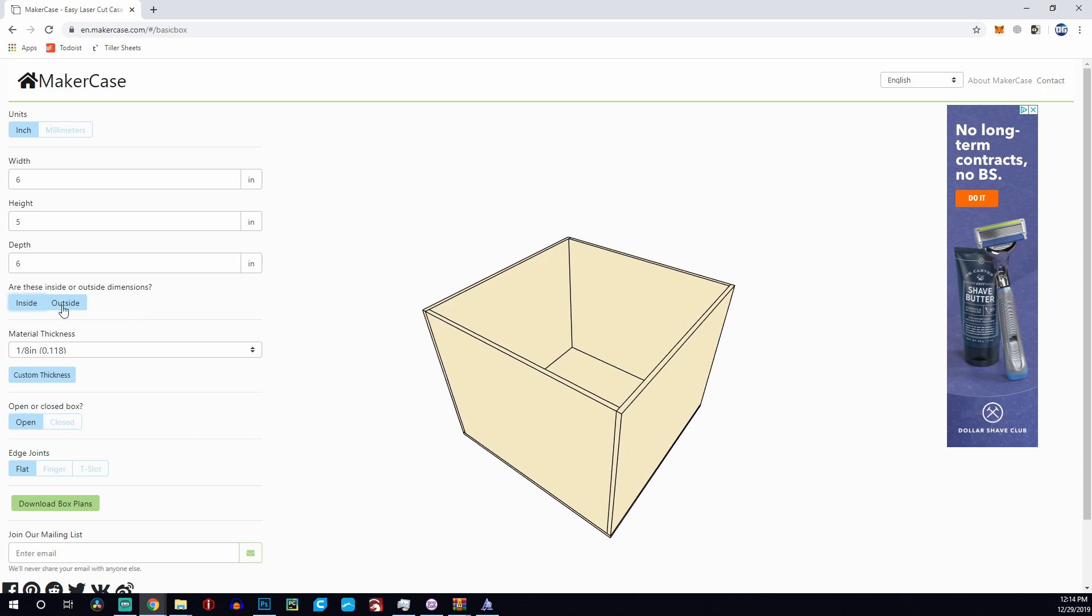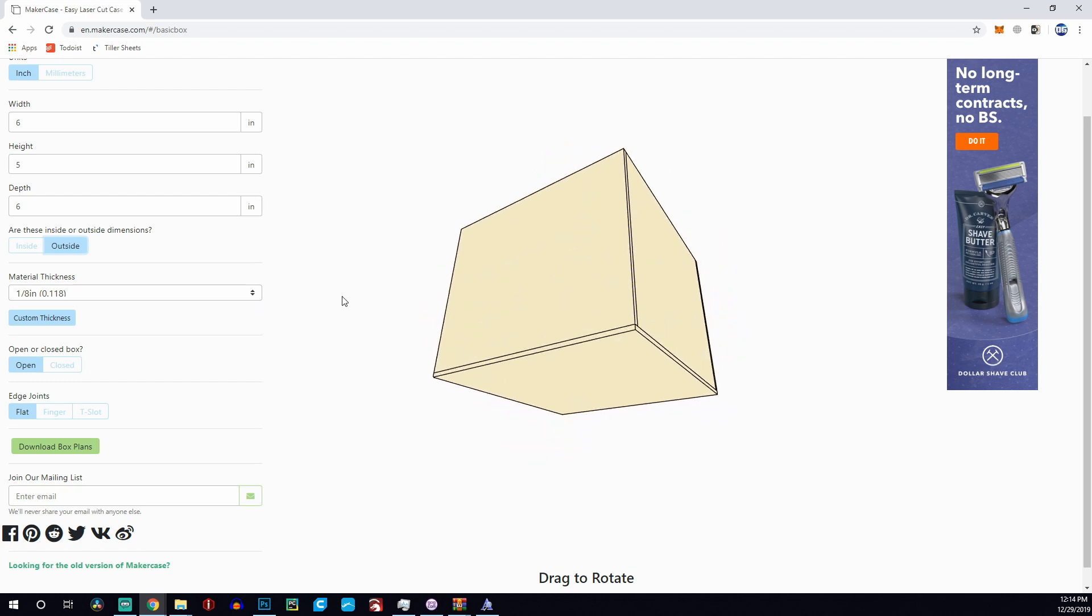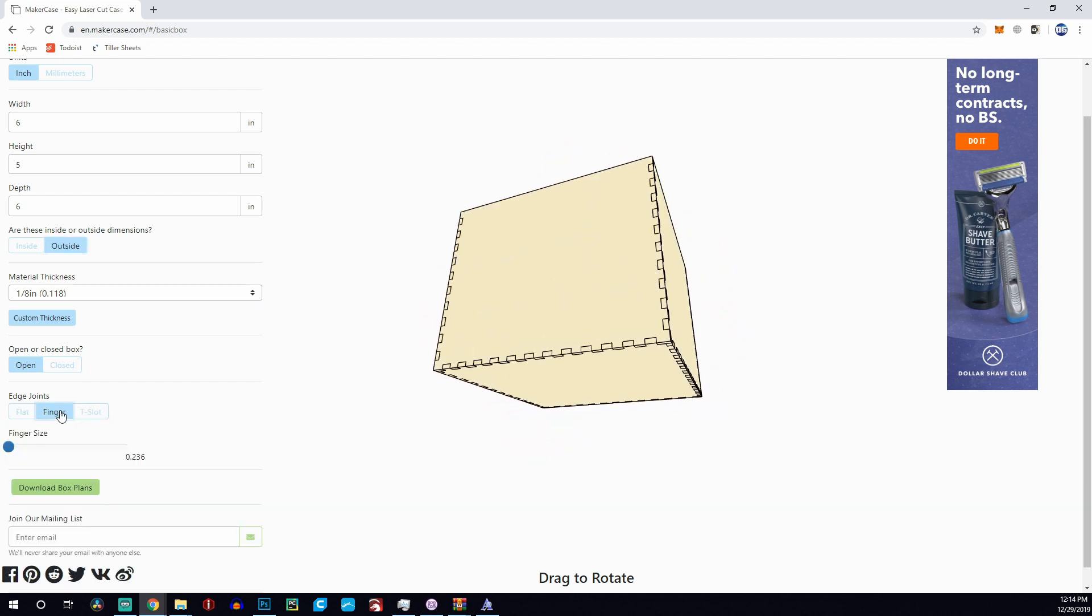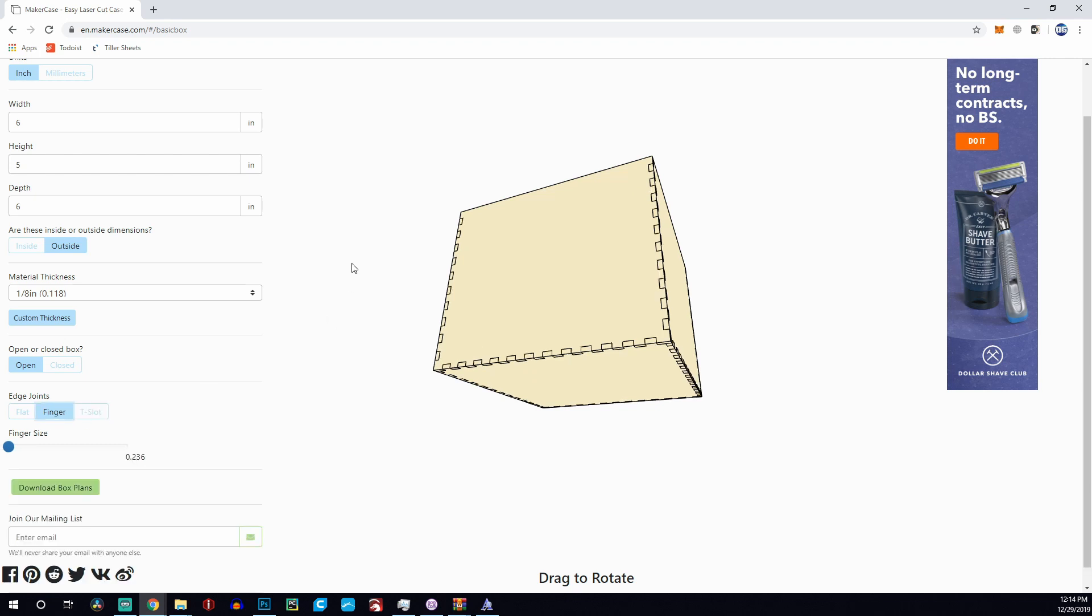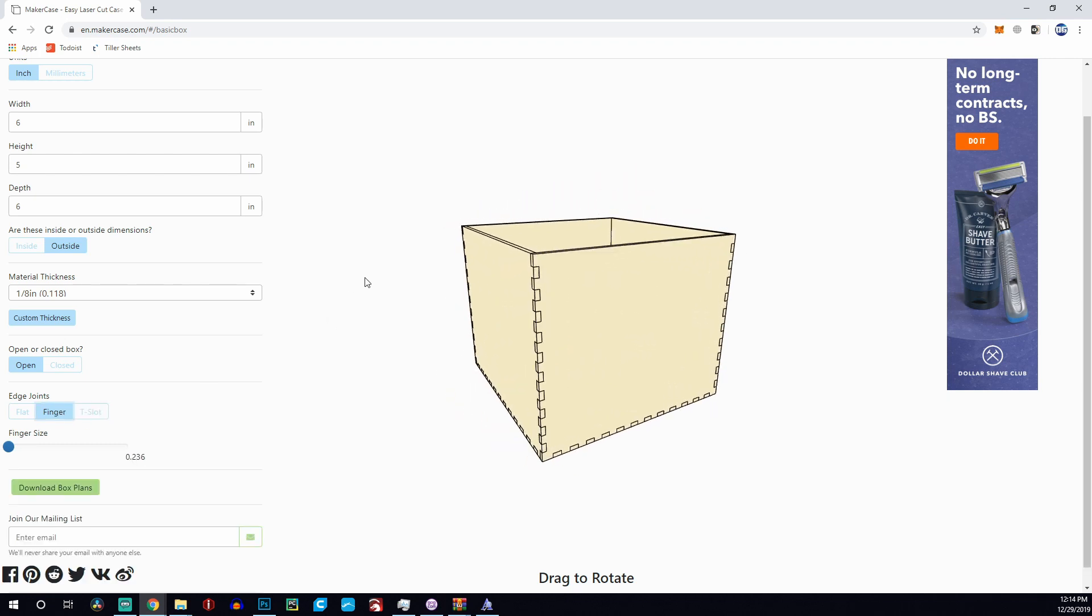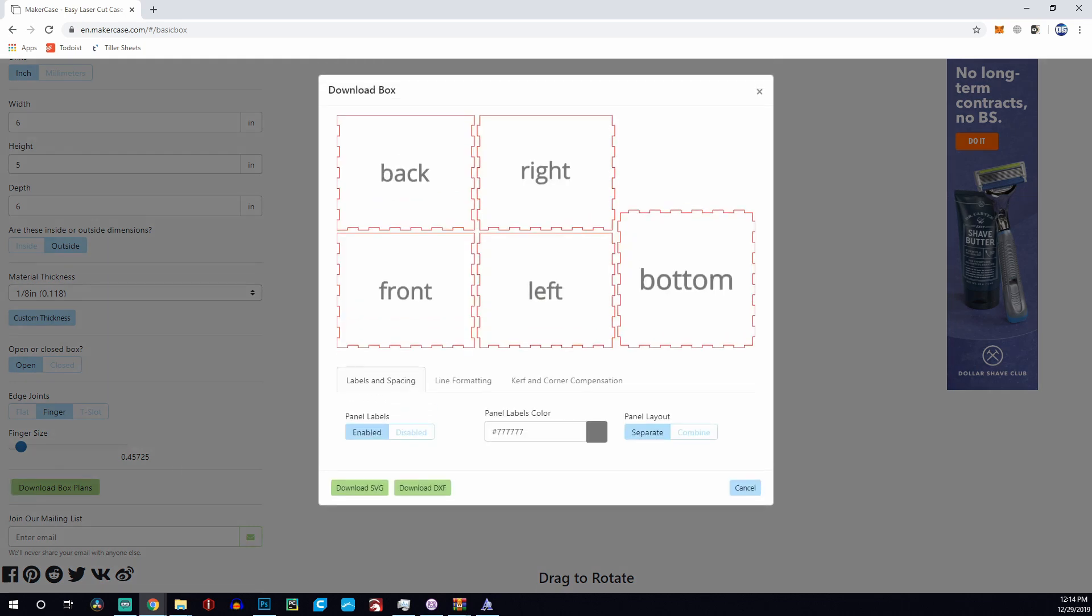And then you have the ability to choose whether those are the inside or outside dimensions. So I went with outside dimensions. Also, how thick your material is. I was using 1/8 inch wood. I then changed the box to open so that way it wasn't enclosed on all sides. And you've got a couple of options for the edge joints. I went ahead and used some dovetails, so that way the wood kind of goes in and out and interlocks with each other. There's also another method, the T-slot, where you can actually use a screw and a nut, which is used on a lot of the older acrylic 3D printers. But I preferred this, and I was gonna use wood glue.